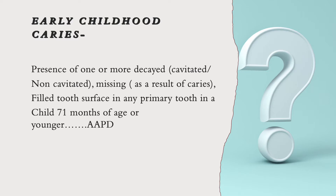To start with early childhood caries, we'll take up the definition as given by the AAPD — the American Association of Pediatric Dentistry. It states that the presence of one or more decayed teeth, whether cavitated or non-cavitated, a missing tooth due to caries, or any filled tooth surface in any primary tooth in a child of less than 71 months of age (approximately 6 years) falls into the category of early childhood caries.